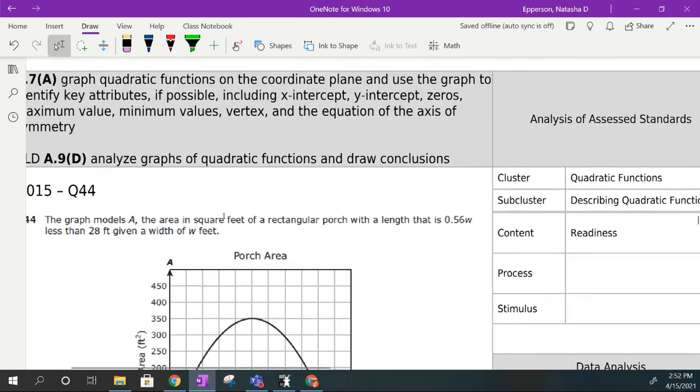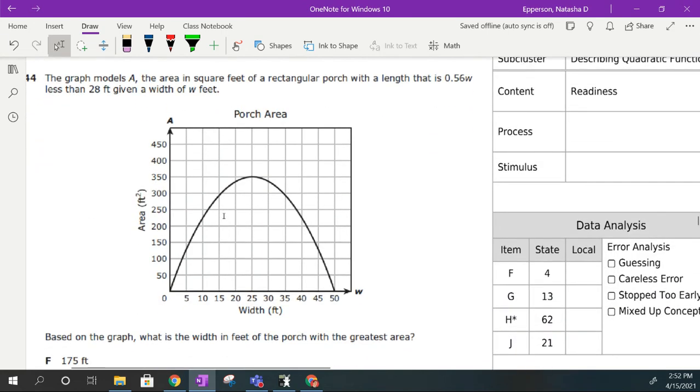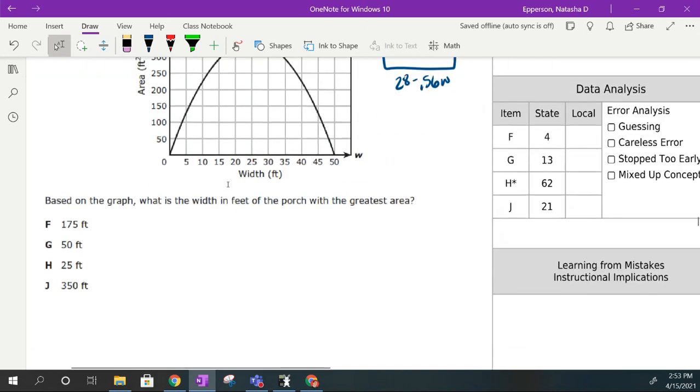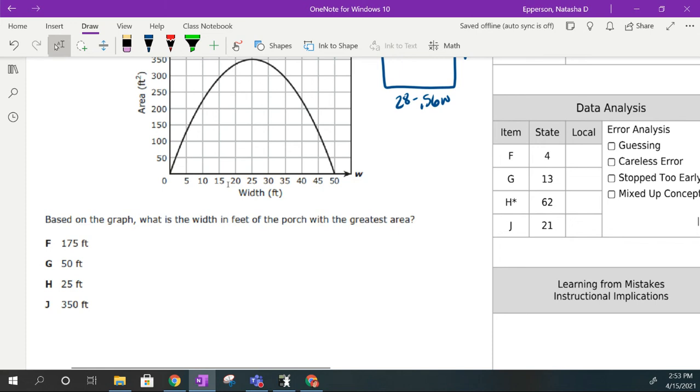The last question that we're going to do for this TEKS in this video, we're dealing with this porch area graph model and the area of a square and a rectangle of porch with the length of 0.56 width and less than 28 feet. So thinking about that as a graph. So we're talking about 28 minus 0.56 width and then the width would be our w.